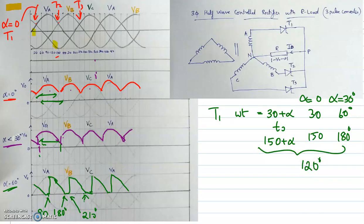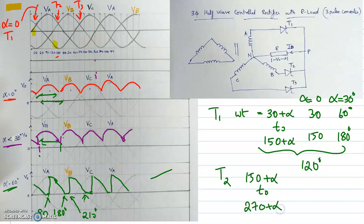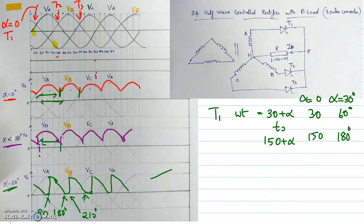Similarly, thyristor T2 will be conducting from 150 plus alpha to 270 plus alpha. So at any instance, the degree of conduction will always be 120 degrees. Now we will look at the case for alpha greater than 30 degrees.